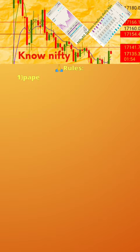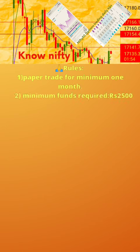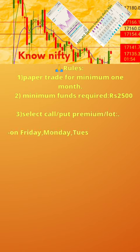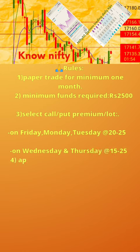Please follow the 7 rules below. 1. Paper trade for minimum 1 month. 2. Minimum funds required: 2,500 rupees. 3. Select call or put premium per lot: on Friday, Monday, and Tuesday at the rate of 20–25; on Wednesday and Thursday at the rate of 15–25.